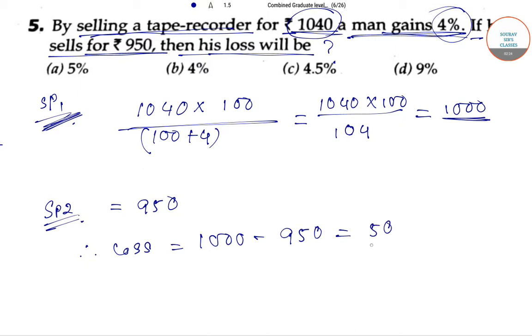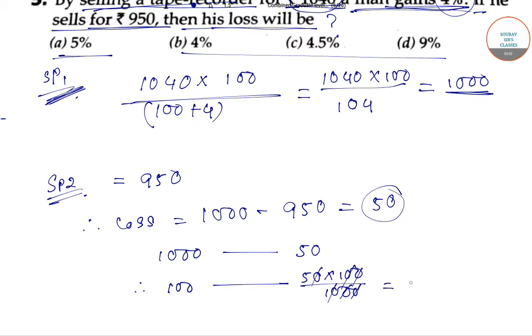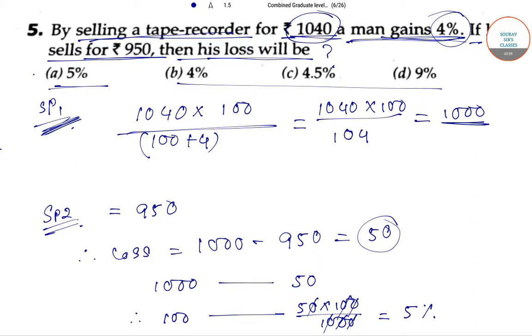So clearly it's 50 rupees. Now we have to find it in percentage, as the options are in percentage. So for 1000, the loss is 50 rupees. In percentage, that would be 50 times 100 divided by 1000. So here we have 5%. Option A will be the correct answer, that is 5%.